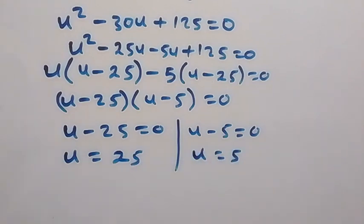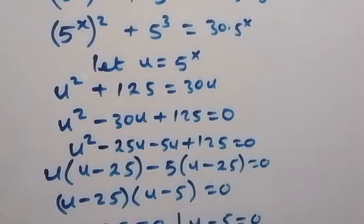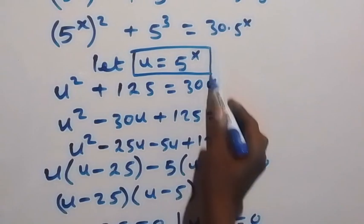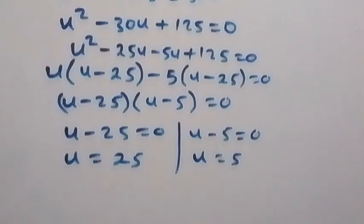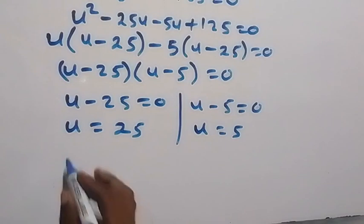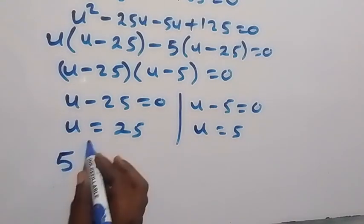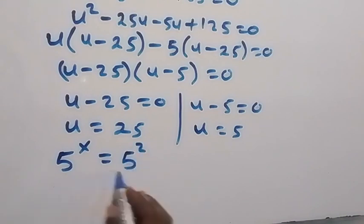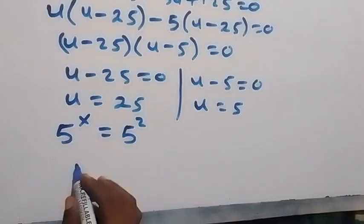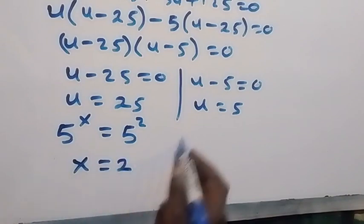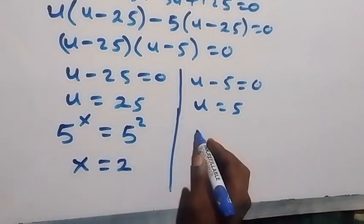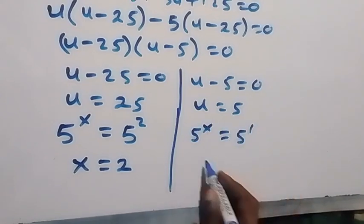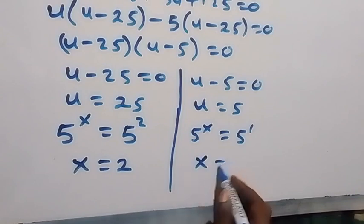Recall that u equals 5 raised to power x. So 5 raised to power x equals 25, which is 5 squared, giving x equals 2. For the other case, 5 raised to power x equals 5 raised to power 1, giving x equals 1.